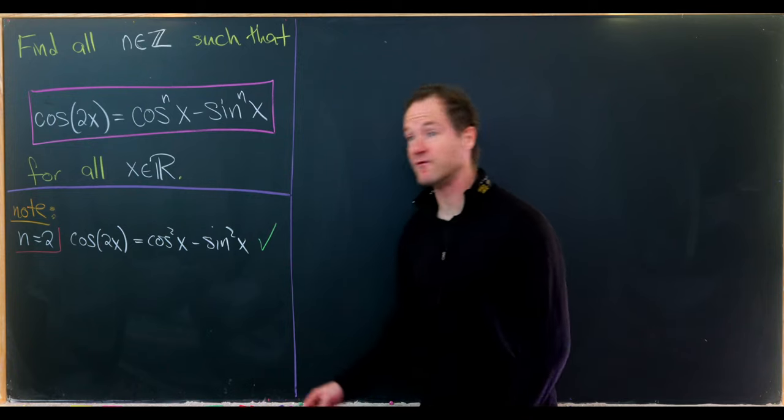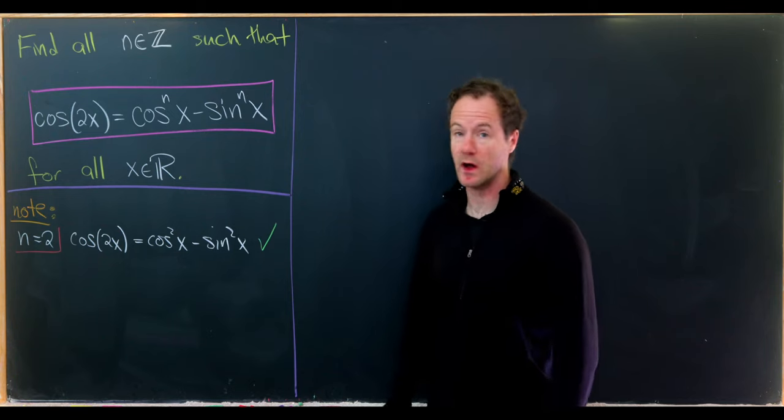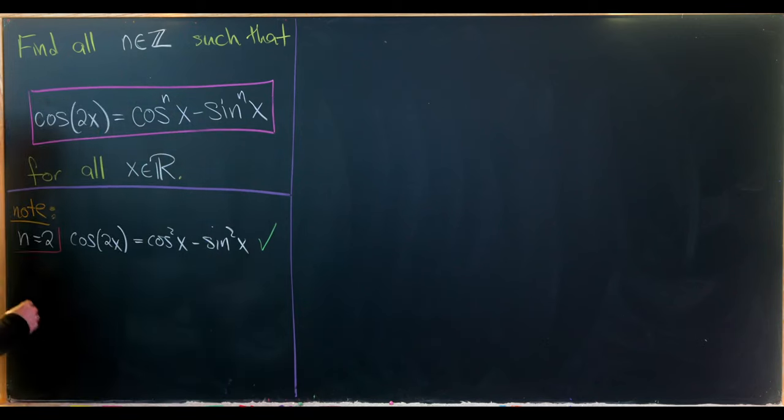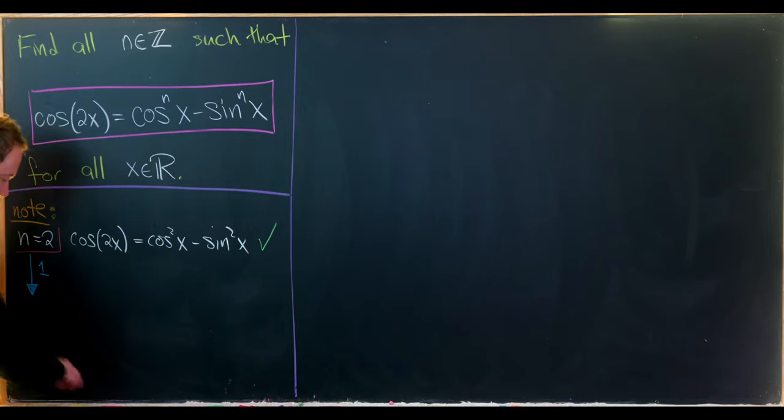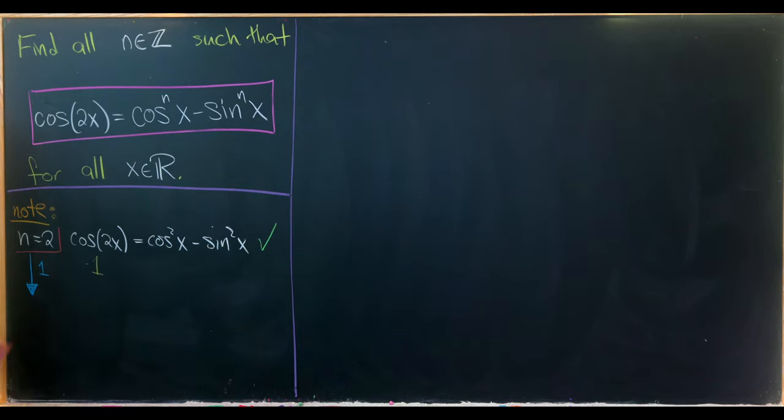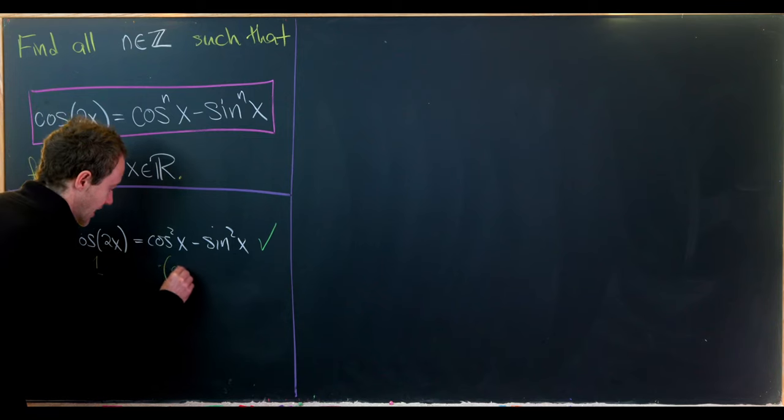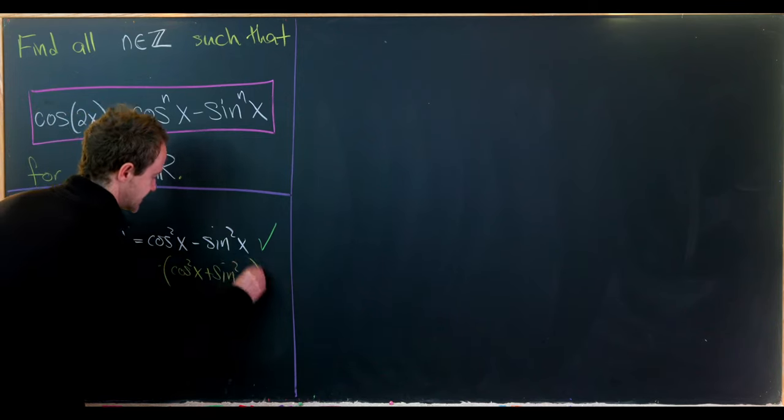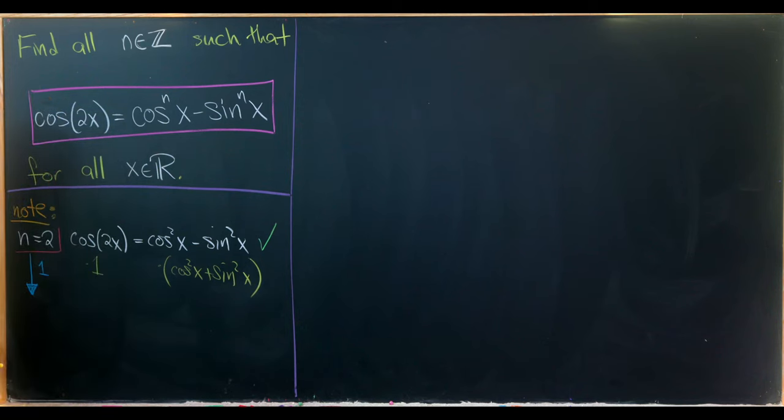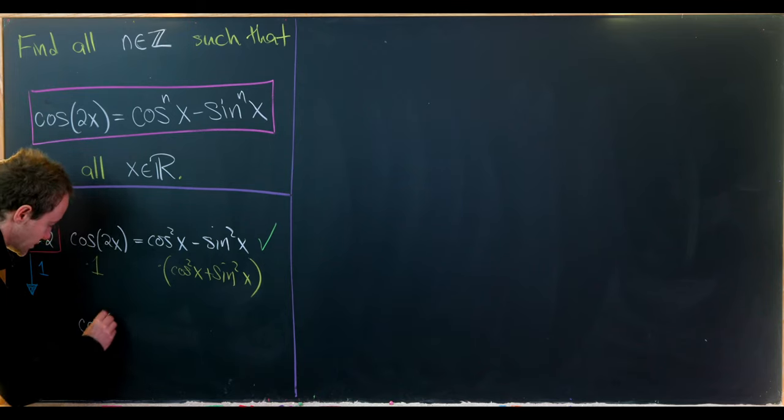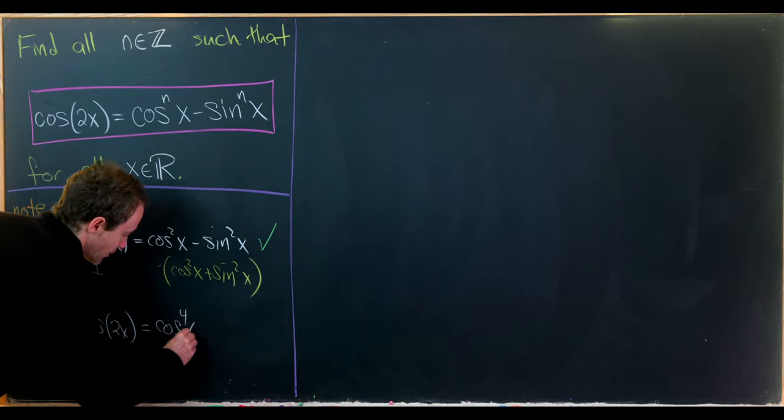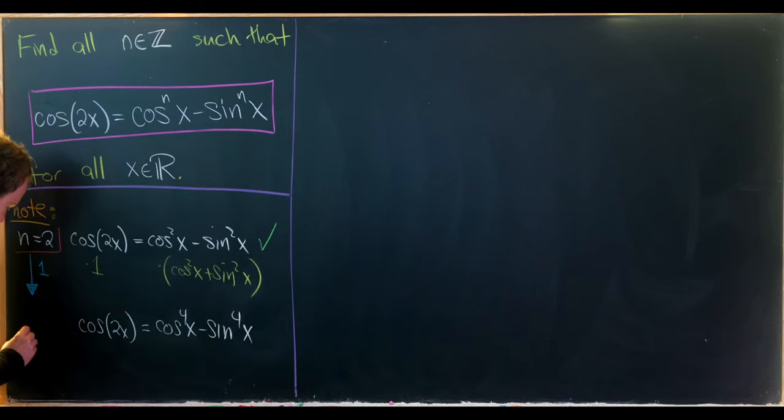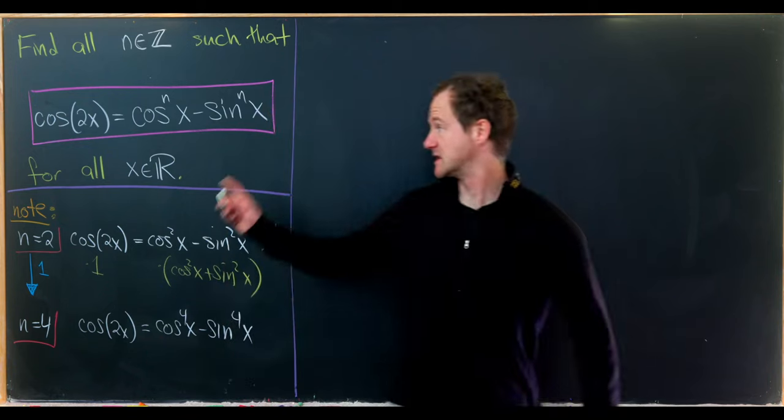In fact, we can create another one very quickly by multiplying both sides by 1, but we'll multiply by a different version of 1 on either side. On the left we'll multiply by 1, and on the right we'll multiply by cosine squared of x plus sine squared of x. Using the difference of squares factorization, we get cosine to the fourth x minus sine to the fourth x. So n equals 4 also is a solution here.